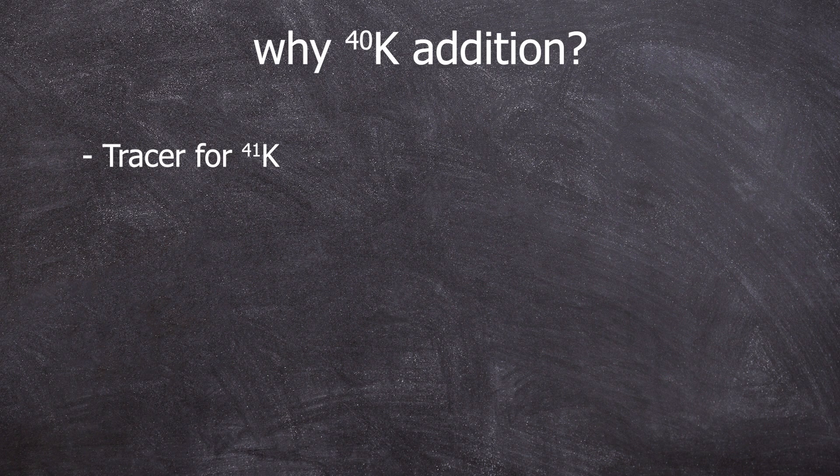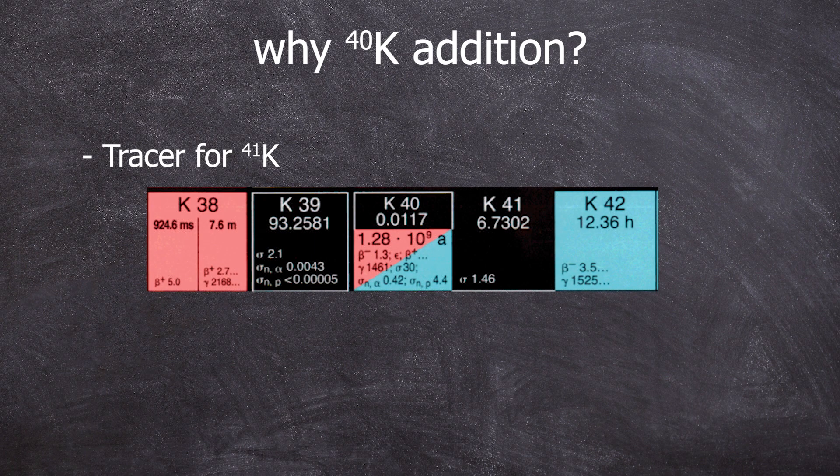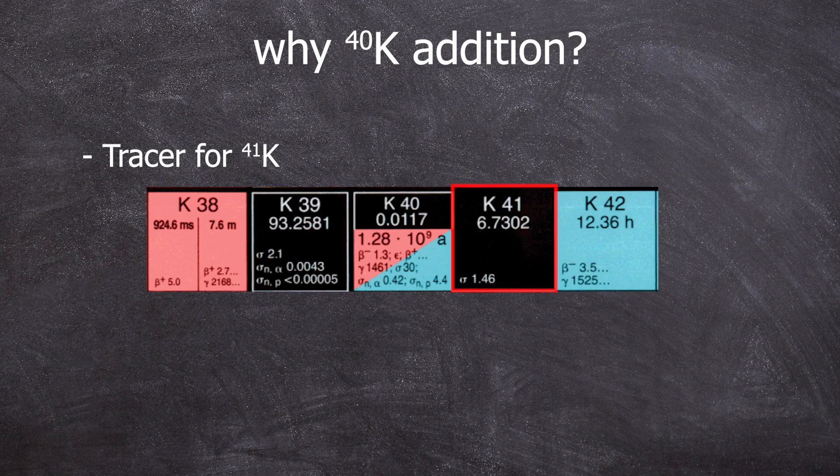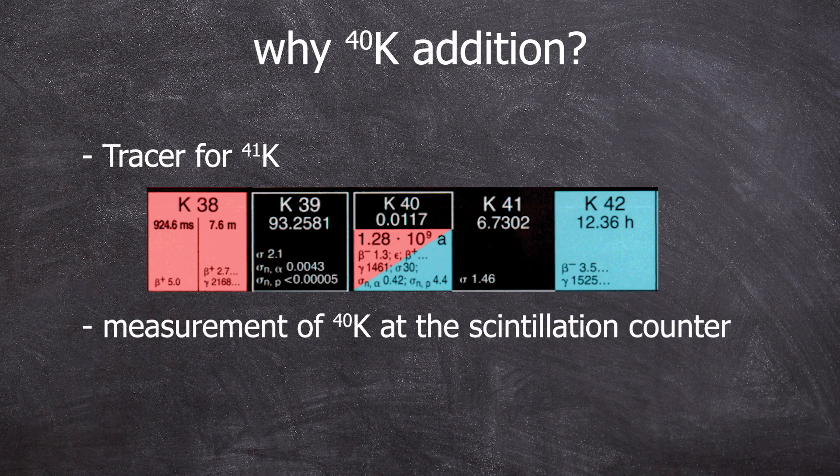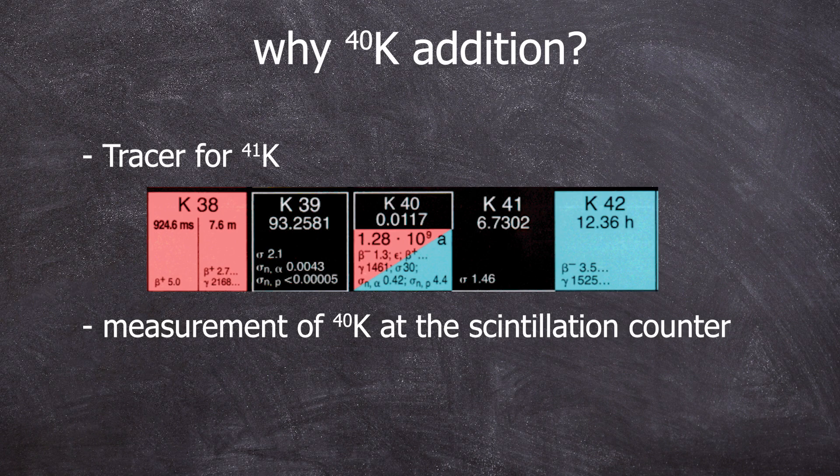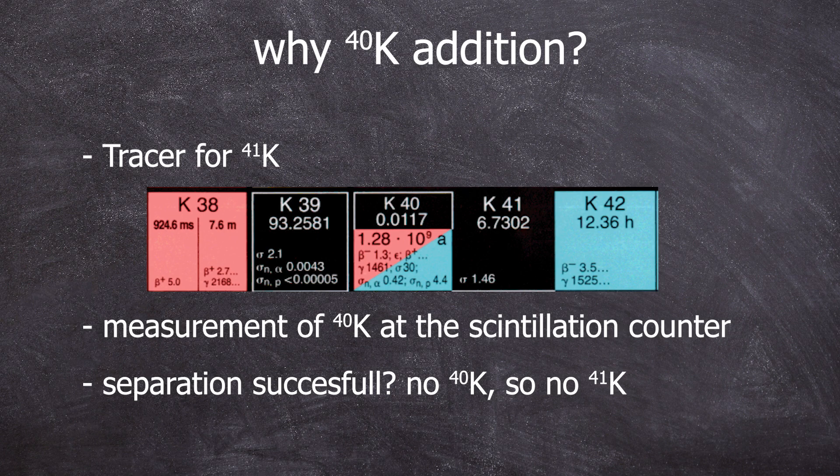Potassium-40 was used in the experiments to check the potassium content in general. But why? Potassium primarily exists as potassium-39 and potassium-41. And this stable potassium-41 messes up our measurement. Since potassium-40 emits radiation nicely, we can track the potassium-41 content of the sample through the measurement of the scintillation counter, which measures the radioactive potassium-40. And the radioactive potassium-40 and potassium-41 are chemically identical. When I decanted the dissolved potassium ions during the carbonate washing step from the solution, I separated the calcium from all potassium isotopes.